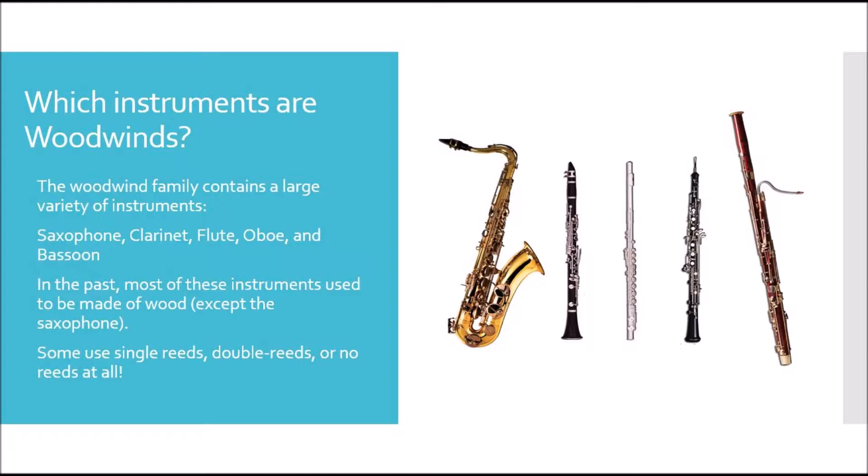They all look very different and they all sound very different. In the past, most of these instruments used to be completely made out of wood and over time have evolved to include more metal keys, or even be completely made out of metal like the flute and the saxophone. Some of these instruments use single reeds like the saxophone and clarinet, double reeds like the oboe and the bassoon, or use no reeds at all like the flute.